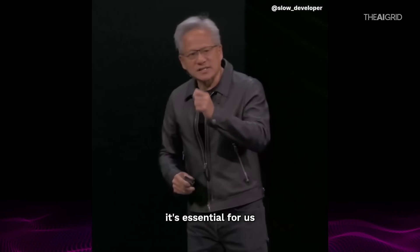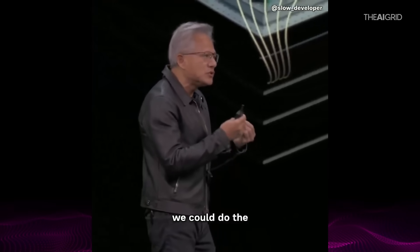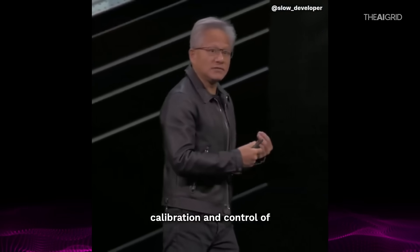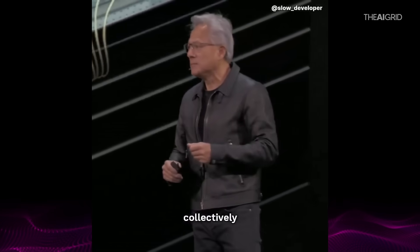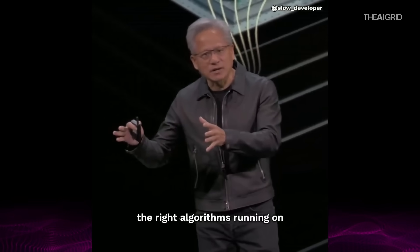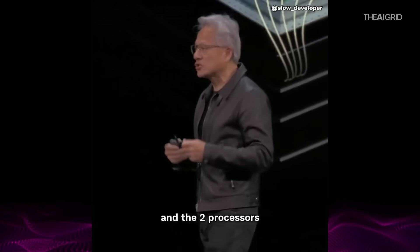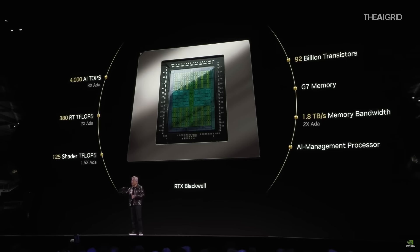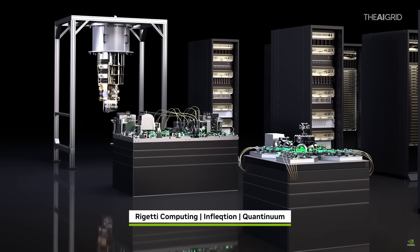We now realize that it's essential for us to connect the quantum computer directly to a GPU supercomputer so that we could do the error correction, so that we could do the artificial intelligence calibration and control of the quantum computer, and so that we could do simulations collectively, working together, the right algorithms running on the GPUs, the right algorithms running on the QPUs, and the two processors, the two computers working side by side. This is the future of quantum computing. NVQ link is basically a superhighway connection between quantum computers and Nvidia's AI supercomputers, but it's not just any connection. It's insanely fast and incredibly smart.